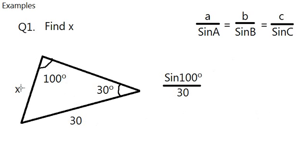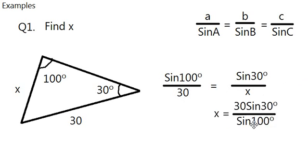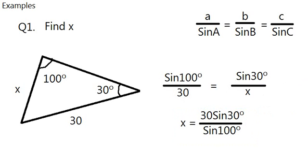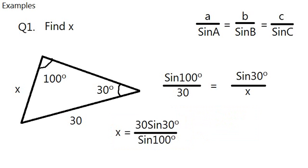And to get x, we simply create an equation. Just like that. So we have sine 100 over 30 is equal to sine 30 over x. How do you find x? Well you cross multiply and rearrange. And so I've done that quickly for you as x equals 30 sine 30 over sine 100. And that will result in side 15.2 rounded off to three significant figures.